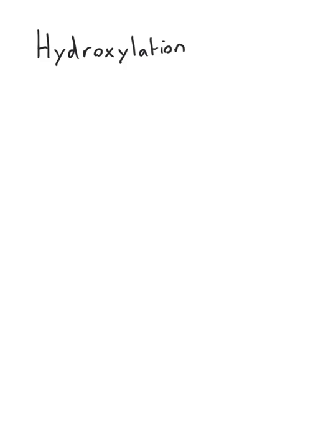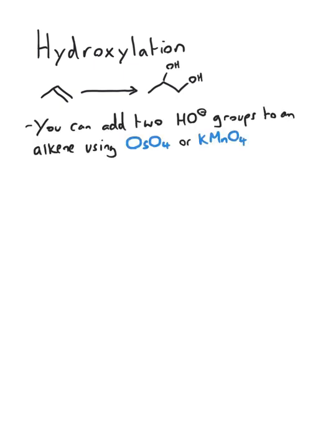This video is on hydroxylation. Hydroxylation is the process of converting an alkene into a 1,2-diol. You can add two hydroxide groups to an alkene using osmium tetroxide or potassium permanganate.